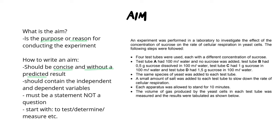When writing an AIM, it must be concise — short and sweet — and most importantly without a predicted result. You're not saying what's going to happen; you're simply talking about the purpose of the experiment. The AIM should contain an independent and a dependent variable, which I'll outline in the next portion of the video. Most importantly, your AIM must be a statement, not a question. We should start our AIM with words like 'to test,' 'to determine,' or 'to measure.'